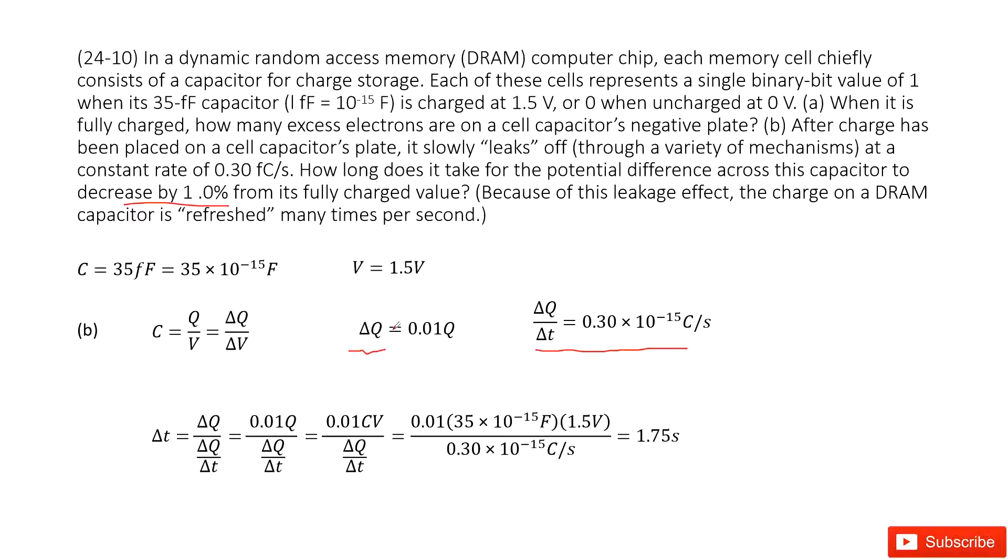And then to find the time taken, if you want to know the time taken, we can use the total charge decreased, that is 1% of the full charge value, divided by the constant rate. How do you find the full charge value?